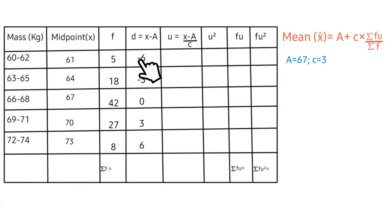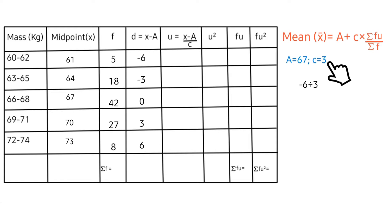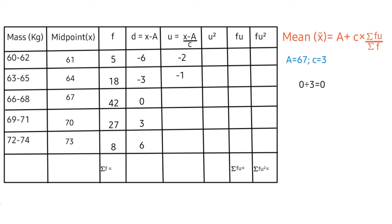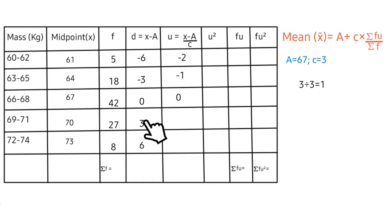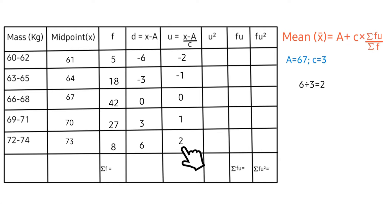For the first u value: (x minus a) is minus 6, so minus 6 divided by c (which is 3) gives minus 2. Next is minus 3 divided by 3. Then 0 divided by 3. Next is 3 divided by 3. Lastly, 6 divided by 3 gives 2.